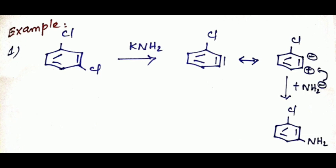In the second step, NH2 minus approaches as the nucleophile at the meta or ortho position. The negative charge is closer to the substituent — that is the benzyne mechanism. The ortho position carries the negative charge and the meta position carries the positive charge. Therefore, NH2 minus approaches at the meta position, and we get the meta product — meta-aminochlorobenzene.